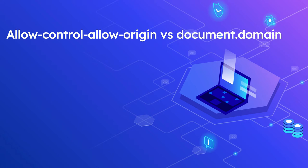In this video, let us see what is the difference between document.domain and Access-Control-Allow-Origin. The document.domain mechanism is intended for allowing client-side communication between frames, rather than client-to-server communication. If you have one frame containing a page from mydomain.com and another frame containing a page from sub.mydomain.com, the two cannot access each other's DOM unless document.domain is set.